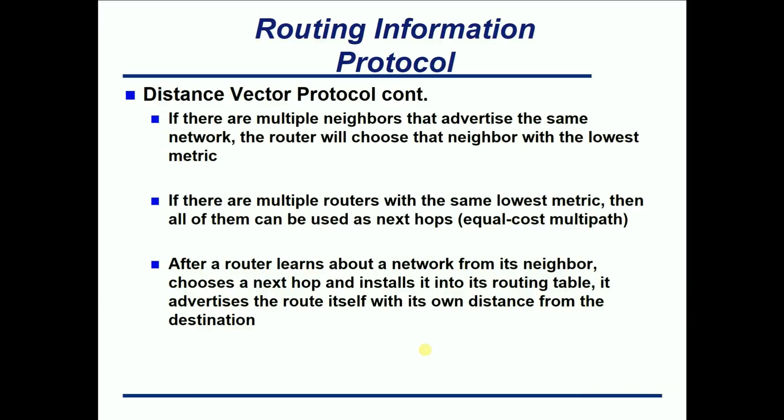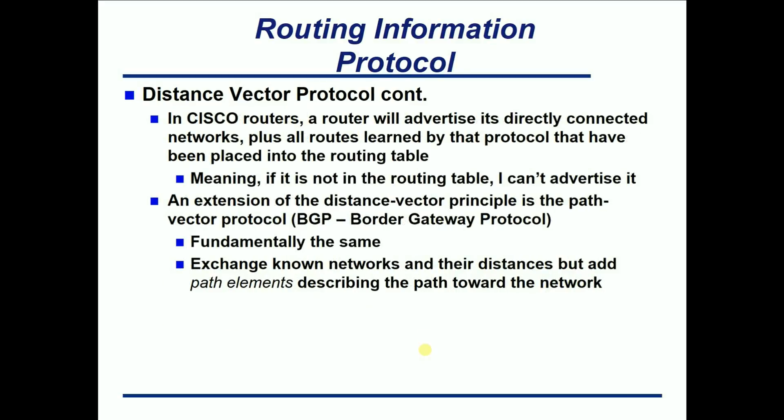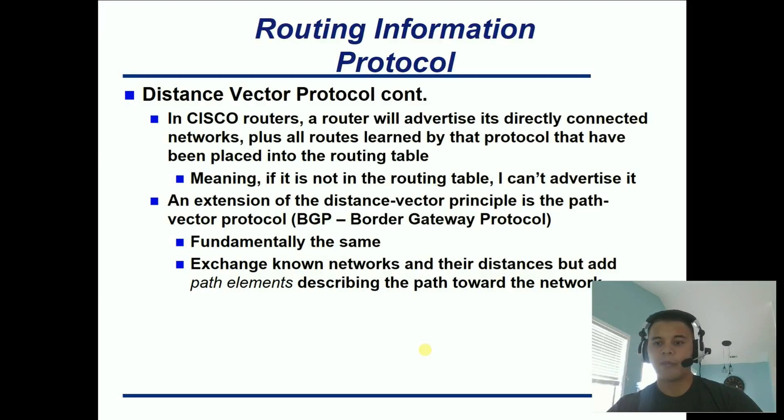After a router learns about a network from its neighbor, chooses a next hop, installs it in its routing table — all that has to come together for it to actually advertise it out as well. Learn the neighbor, learn the next hop, learn the route, put it in the routing table — now you're good to go to tell all your other RIP version 2 friends about it. In Cisco routers, a router advertises directly connected networks plus all of the routes learned through RIP, but it has to be in the routing table. If it's not in the routing table, RIP will not advertise it — that's a big thing when it comes to learning about dynamic routing protocols.